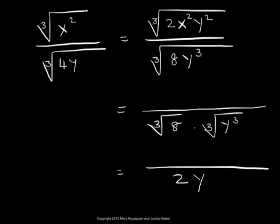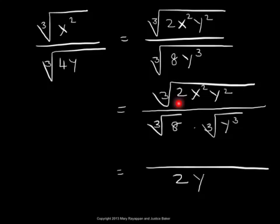And on the numerator, we have cube root of 2x squared y squared. Now, 2 is prime and it's not a perfect cube. x squared is not a perfect cube and the power 2 is less than 3. y squared is not a perfect cube and the power 2 is less than 3. So we cannot do anything beyond just keeping it as it is.